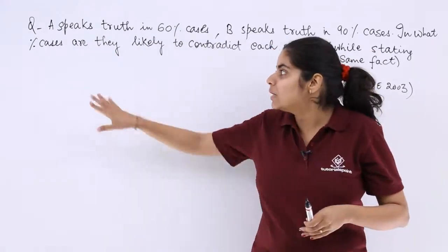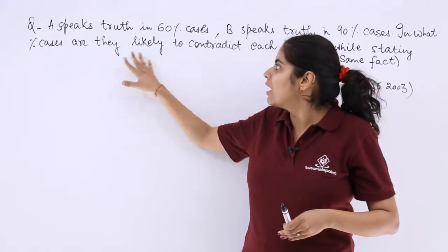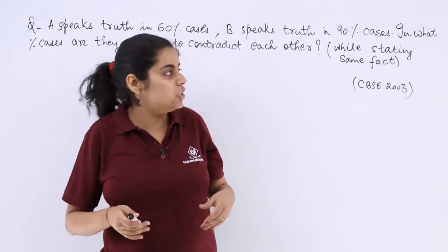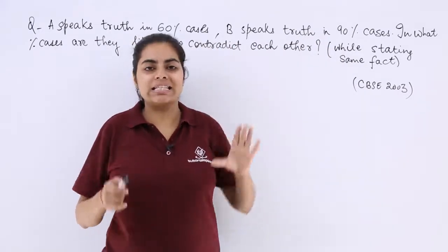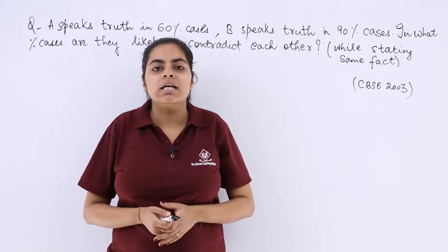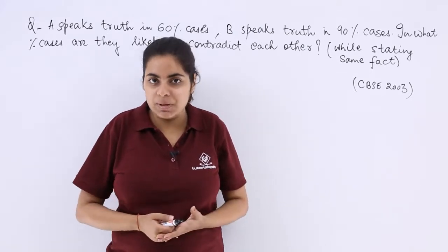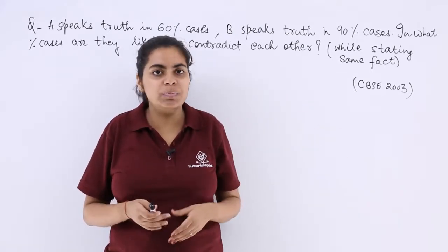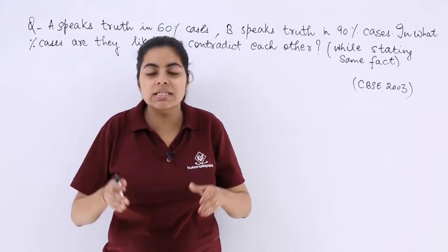In what percentage of cases are they likely to contradict each other while stating the same fact? That means there are two persons A and B. A can speak the truth in 60% of the cases. B speaks truth in 90% of the cases.